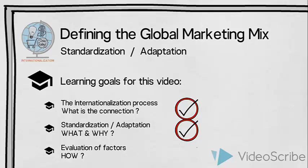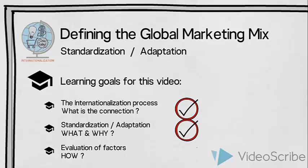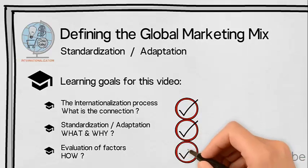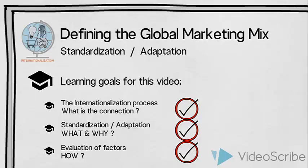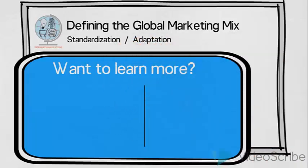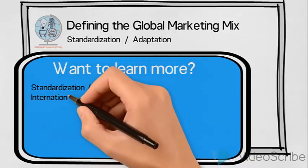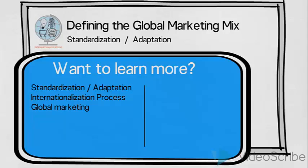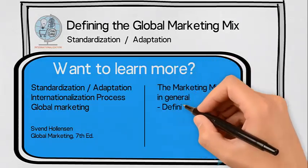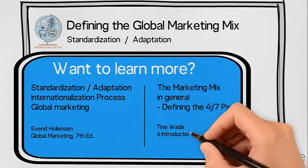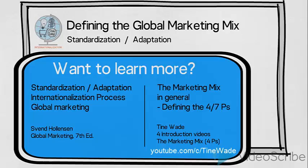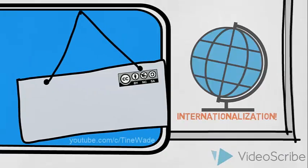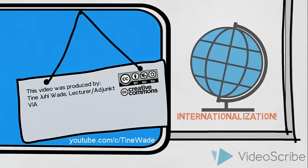In summary, we have now obtained an understanding of what it means to standardize or adapt an organization's global marketing mix, and the connection to the rest of the internationalization process. We have also gained knowledge of how an evaluation can be carried out. To learn more, I recommend reading Global Marketing, 7th edition by Sven Hollandsen. If you would like to learn more about defining the marketing mix in general, I recommend watching my four introduction videos addressing each of the four P's, available on my YouTube channel.